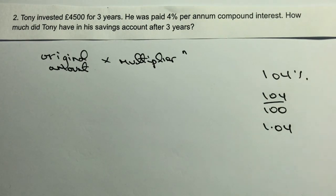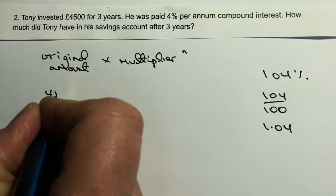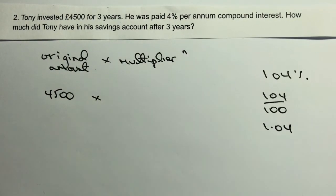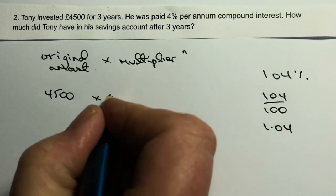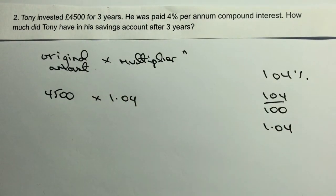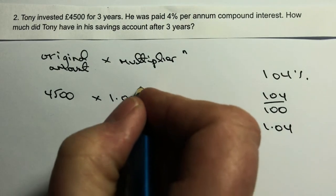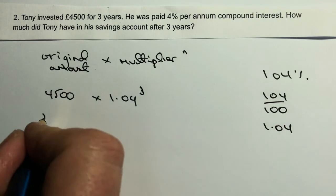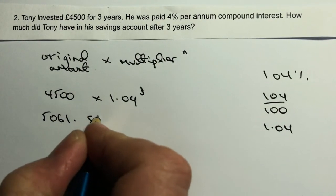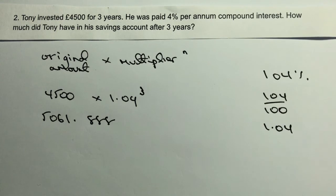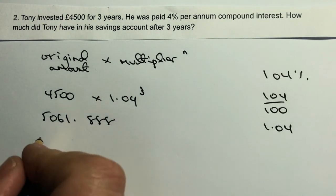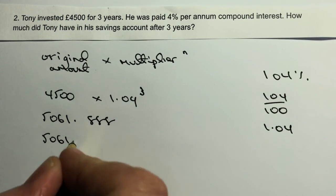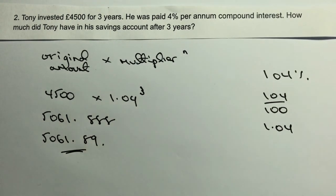So let's start filling this in. The original amount is 4,500, the multiplier we've worked out as 1.04, and n — the number of years — gives us 5,061.888 when fed into the calculator. For the purposes of this calculation, we're going to round that to the nearest penny, which is £5,061.89, and that's the answer to this particular question.